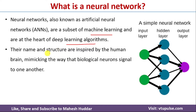Their name and structure are inspired by the human brain — the name 'artificial neural network' is inspired by the human brain, and the structure of that particular neuron is also inspired by the human brain. The artificial neural network mimics the biological neuron's signal passing to one another.